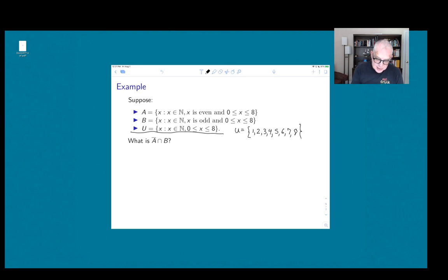A is the set of even numbers in this set. So it consists of 2, 4, 6, and 8. And B is the set of odd numbers in this range. So it consists of 1, 3, 5, and 7.